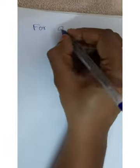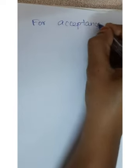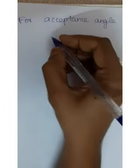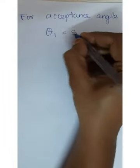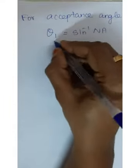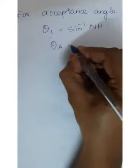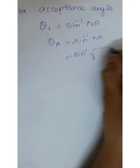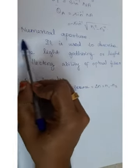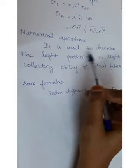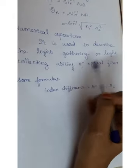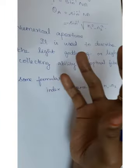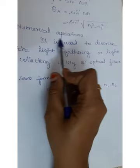For the acceptance angle, theta1 equals sine inverse of the numerical aperture, since theta1 is the acceptance angle. So the acceptance angle equals sine inverse of the numerical aperture, where the numerical aperture equals root of (N1 squared minus N2 squared). The numerical aperture describes the light-gathering or light-collecting ability of the fiber.